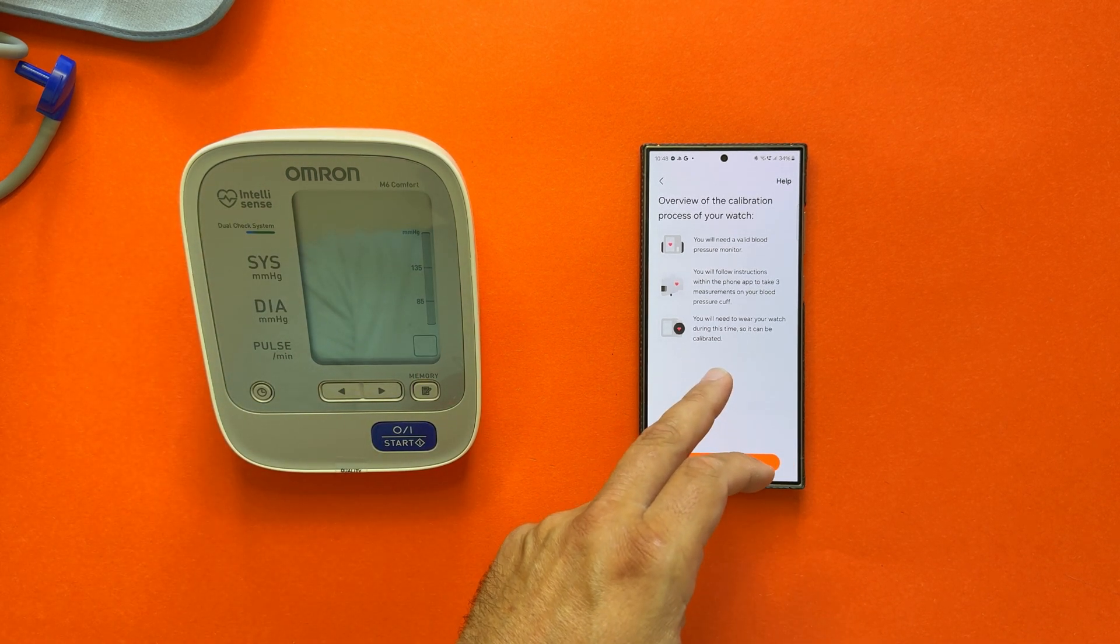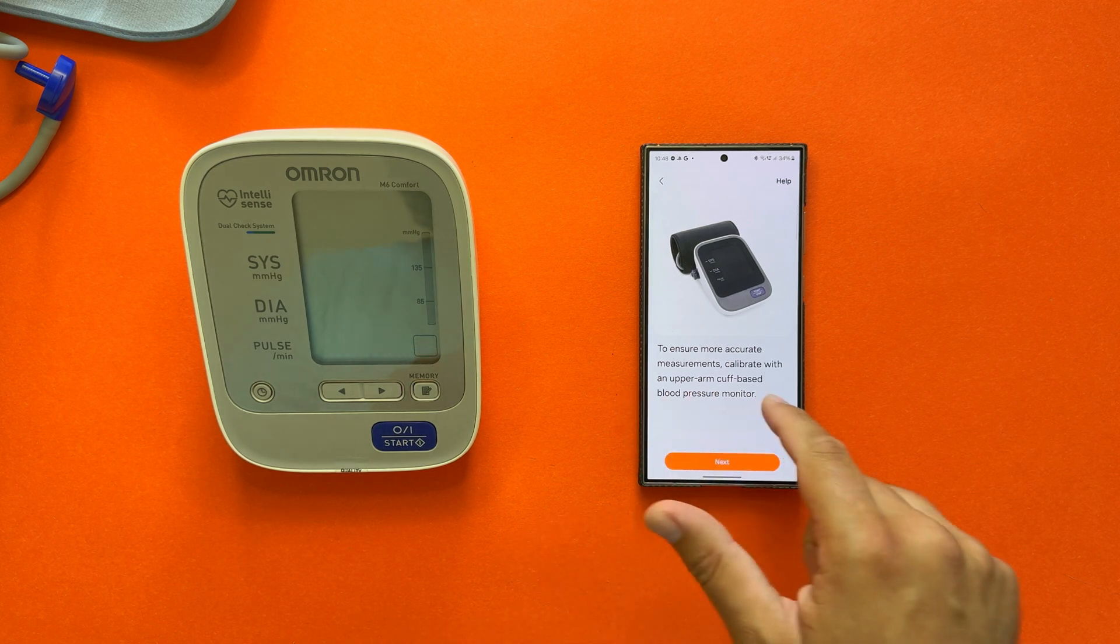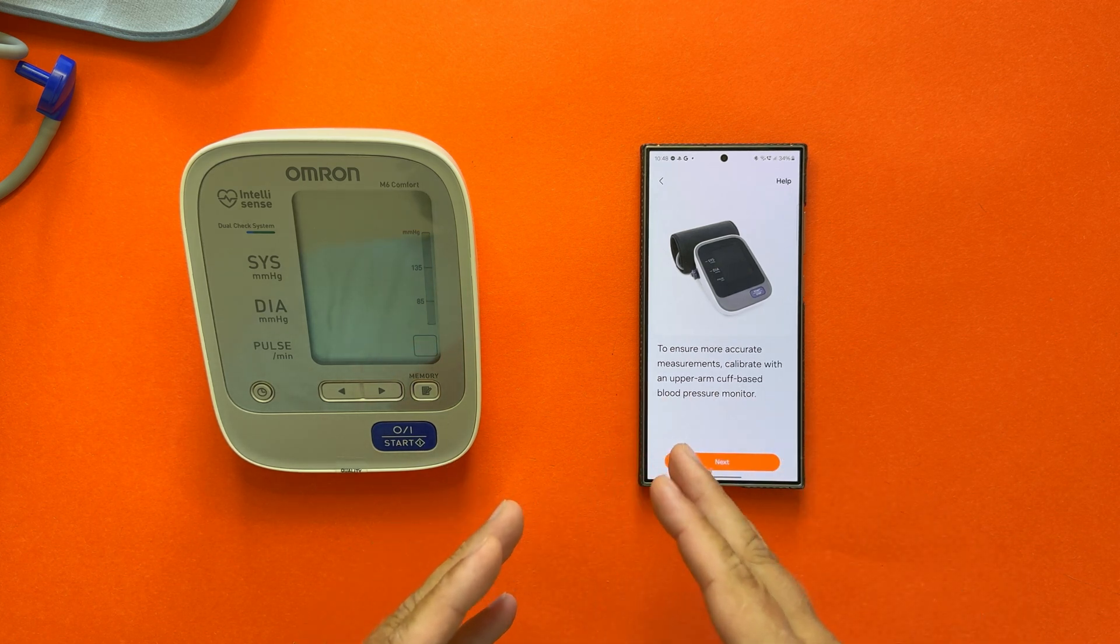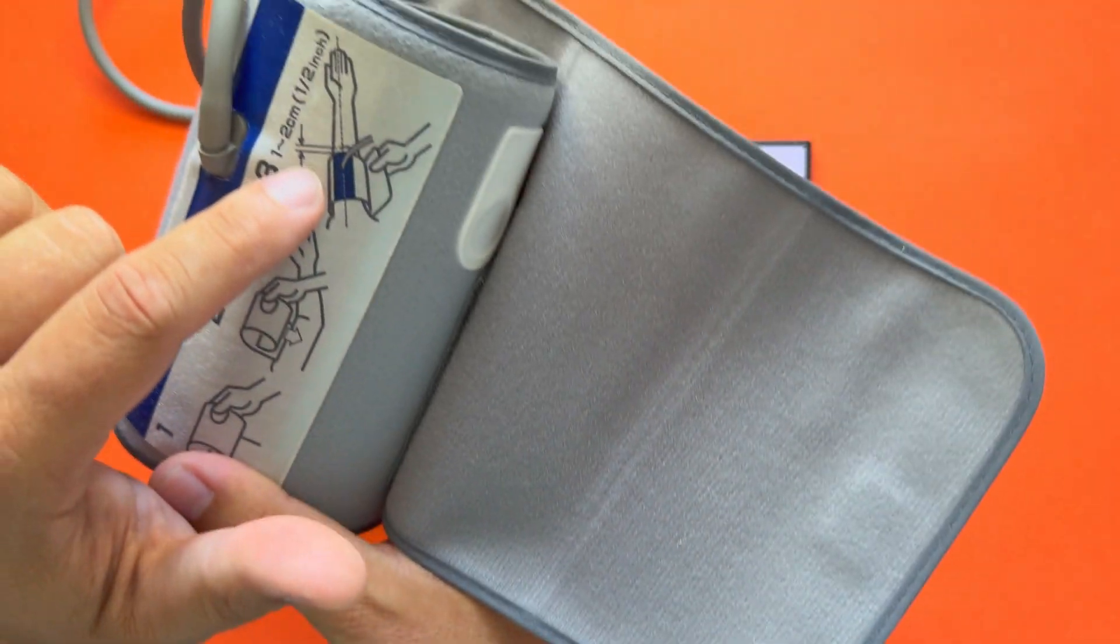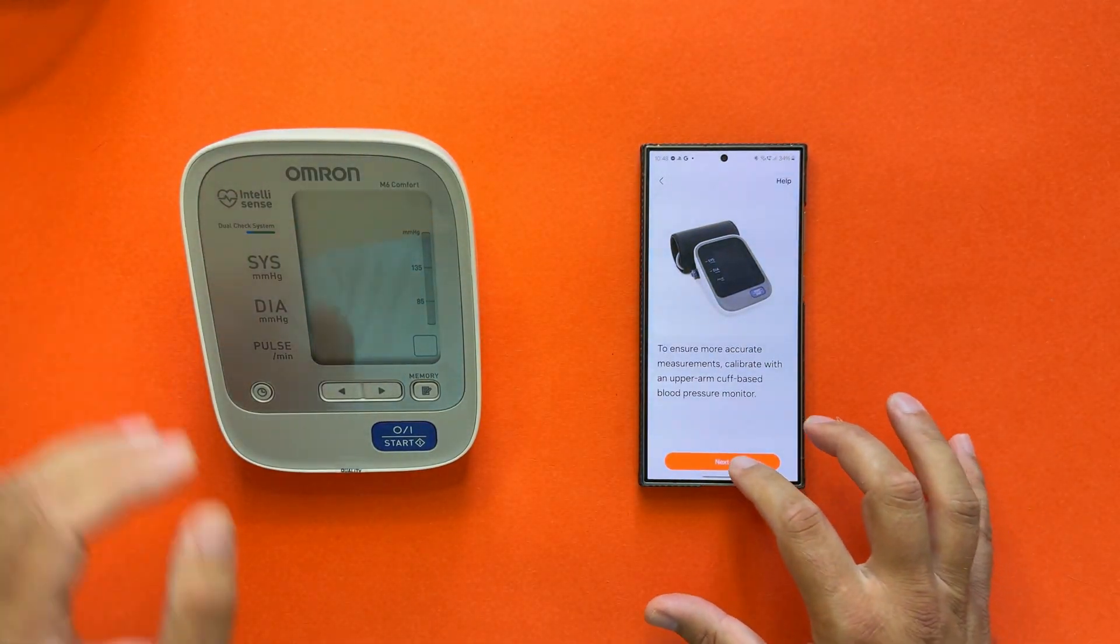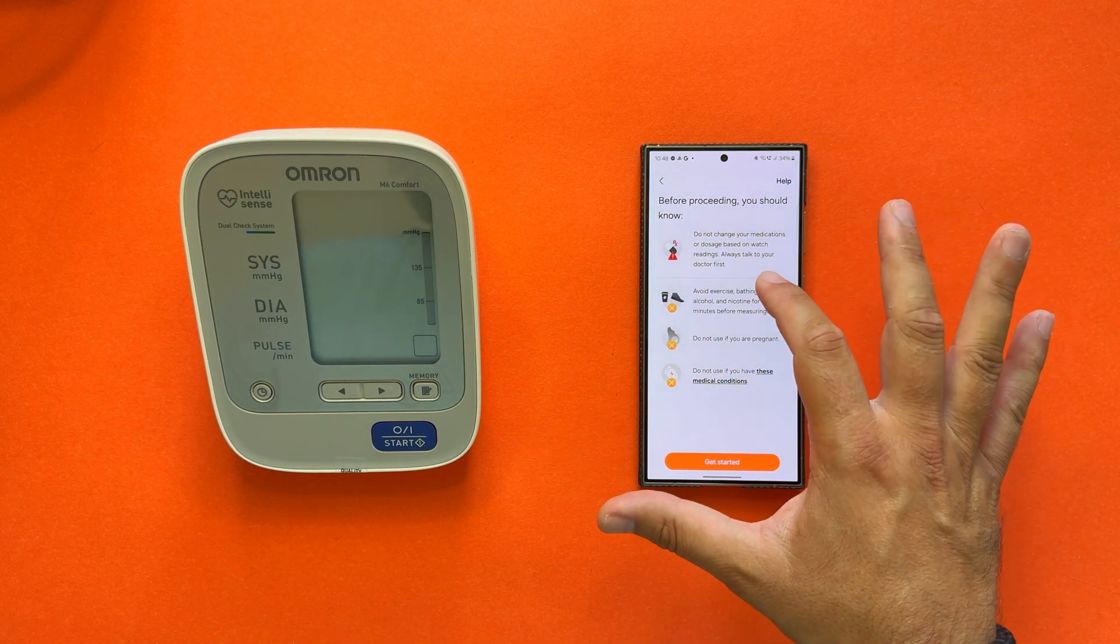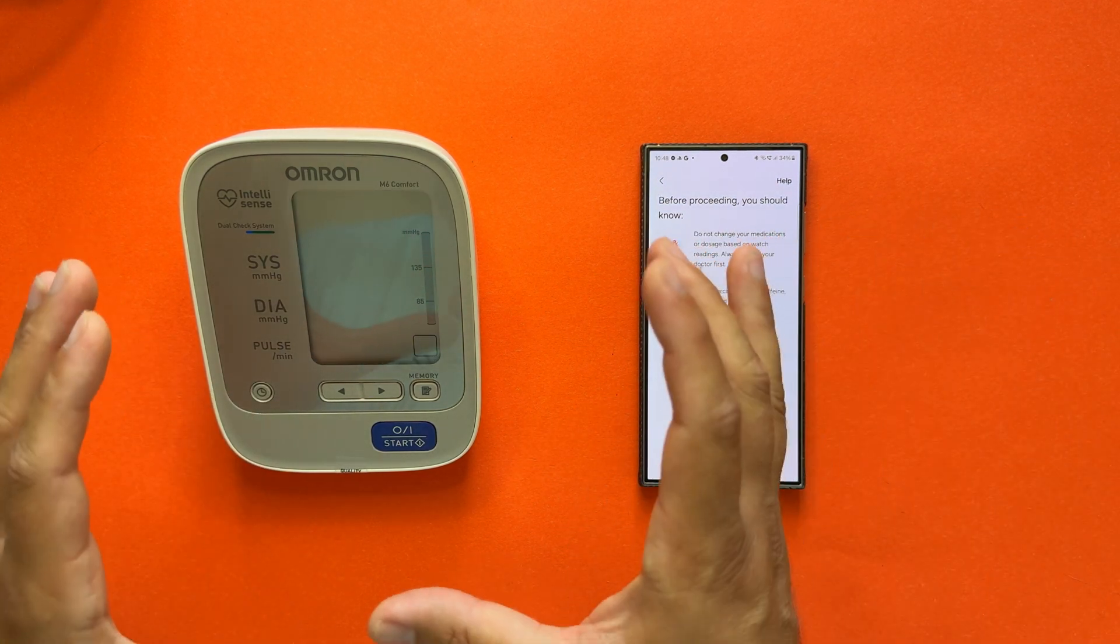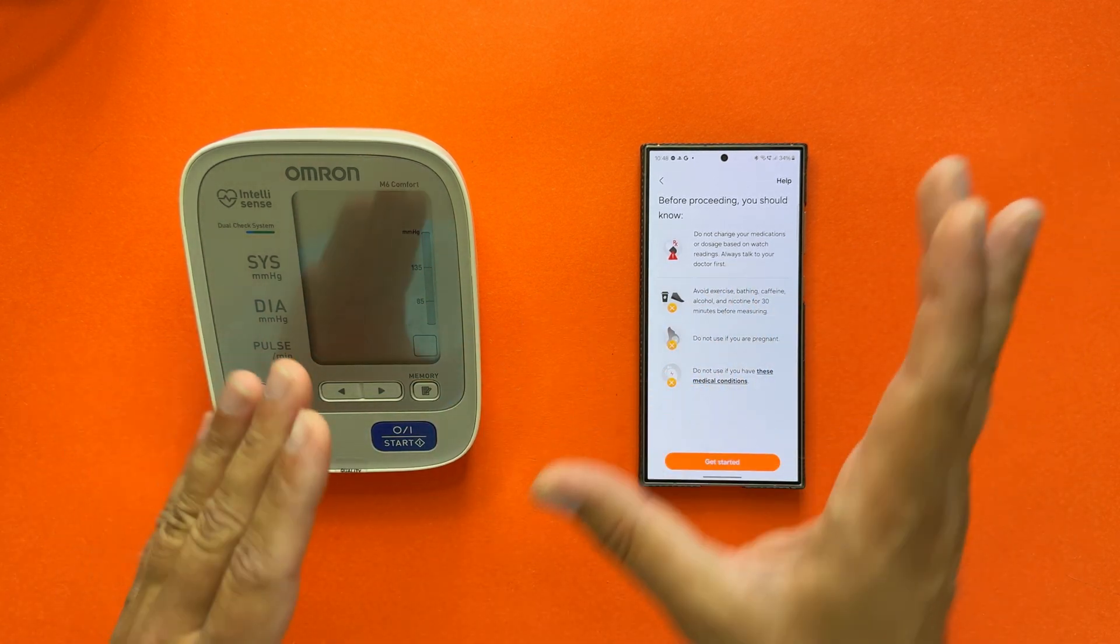You'll need to wear your watch during this time so it can be calibrated. Now I'm going to press Next. To ensure more accurate measurements, calibrate with an upper arm cuff-based blood pressure monitor. This is it, this thing that I'm going to attach to my arm. This is really the best results possible. Now I'm going to press Next. Do not change your medication or dosage based on what you see. This is very important—whatever you do with this, if you want to change something, always please always go and consult the doctor or physician.